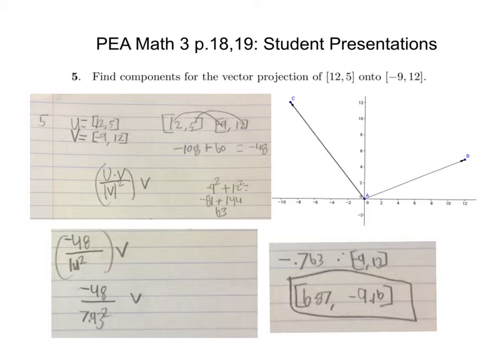So it's negative 48 divided by 7.93 squared. Then that comes out to negative 0.763 multiplied by vector [-9, 12], and I got this.